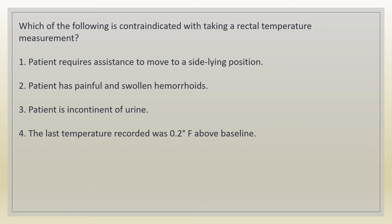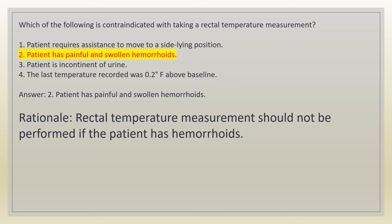Which of the following is contraindicated with taking a rectal temperature measurement? 1. Patient requires assistance to move to a side-lying position. 2. Patient has painful and swollen hemorrhoids. 3. Patient is incontinent of urine. 4. The last temperature recorded was 0.2 degrees Fahrenheit above baseline. Answer: 2. Patient has painful and swollen hemorrhoids. Rationale: rectal temperature measurement should not be performed if the patient has hemorrhoids.